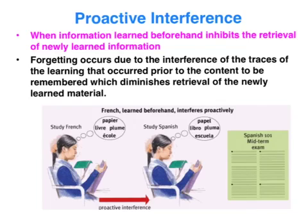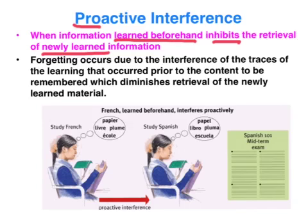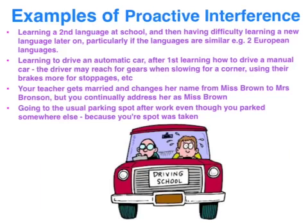Proactive interference — 'pro' meaning forwards — occurs when information learned beforehand inhibits the retrieval of newly learned information. The traces of original learning muddle up our retrieval of newly learned material. A textbook example: in year 7 you learn French, then in year 8 you drop French and pick up German, and your French proactively interferes with your ability to master German.